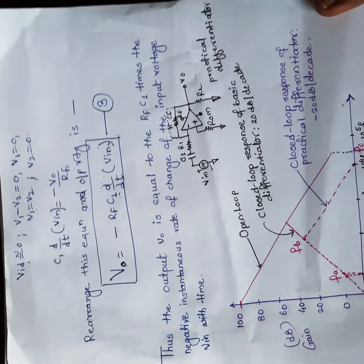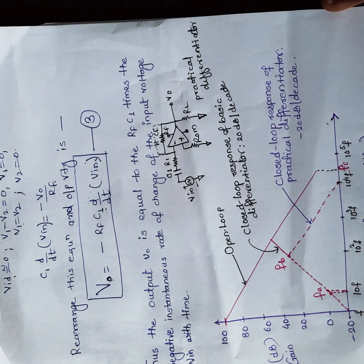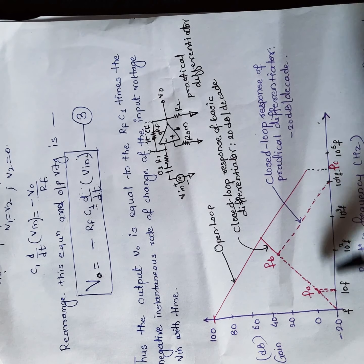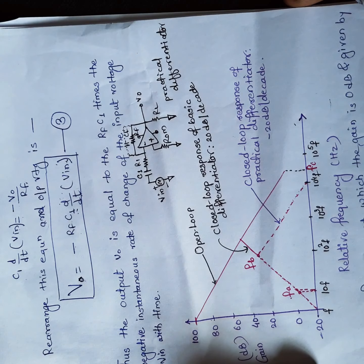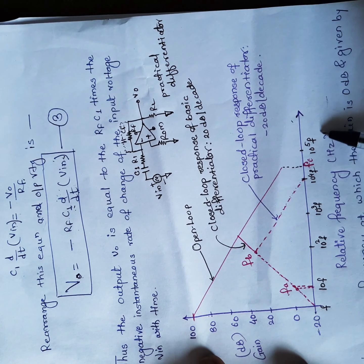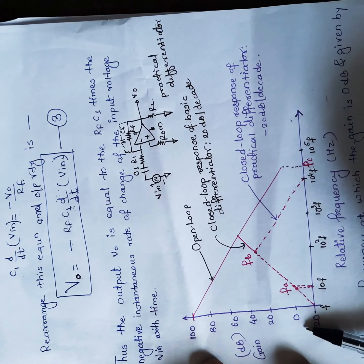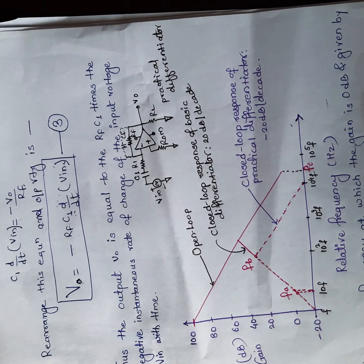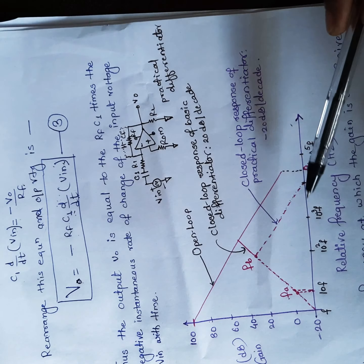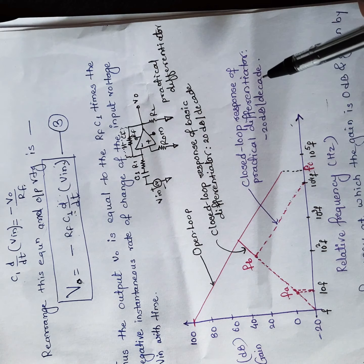Now we have to find out the frequency response of this differentiator circuit. The frequency response is a plot of gain versus frequency — gain expressed in decibels and frequency in hertz. The solid line gives us the open-loop response of the differentiator. On the x-axis we have frequencies from f up to a maximum of 10⁵f, and we have denoted some specific frequencies: fa, fb, and fc.